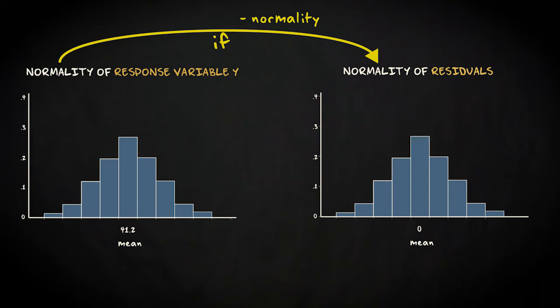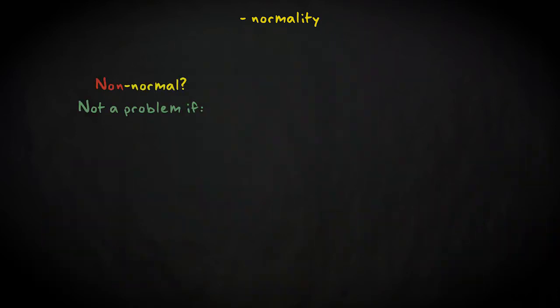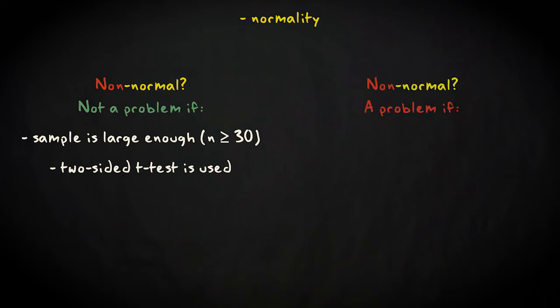Again, assessing normality of the residuals is somewhat subjective, because we rely on visual inspection of a graph. Fortunately, minor deviation from normality is not a problem, as long as the sample is large enough, since according to the central limit theorem, the sampling distribution of the slope will be normally distributed in the long run, no matter how the response variable is distributed. Our inference will still be valid, as long as our sample is large enough, and we use a two-sided test so that any skew in the test statistic distribution, resulting in a heavier tail on one side, is compensated by a smaller tail on the other side. Only if our sample is very small, say less than 30, and the distribution of the residuals is highly skewed or strangely bimodal, do we need to worry.